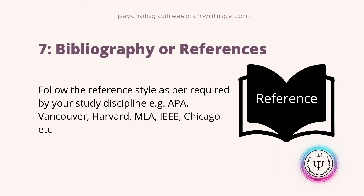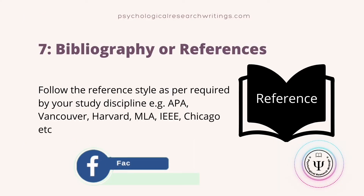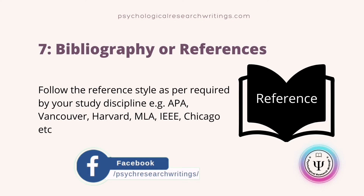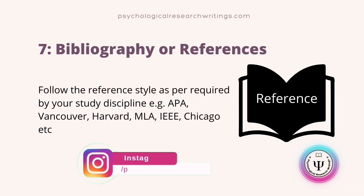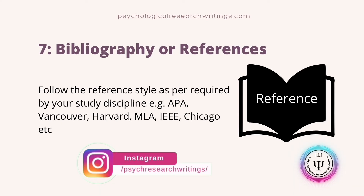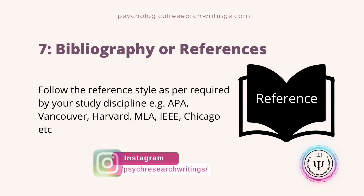The next section is references or bibliography. Choose your reference type as per the guidelines provided by your institution and the recommendations for your research discipline. For example, you can use APA, Vancouver, Harvard, Chicago, MLA, or IEEE.